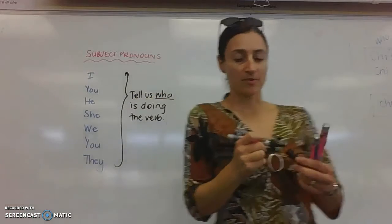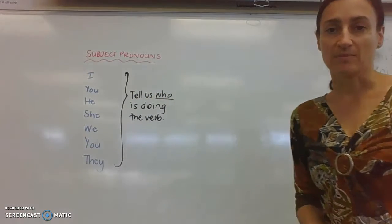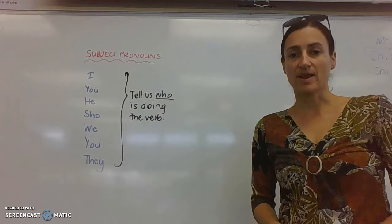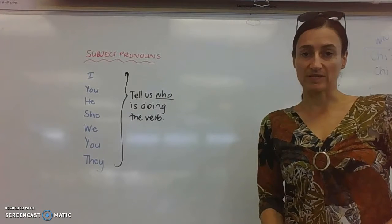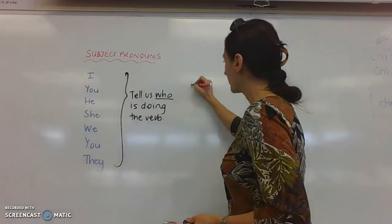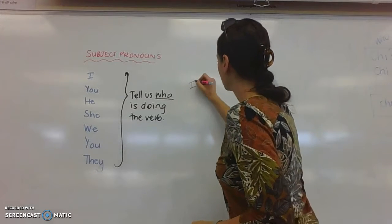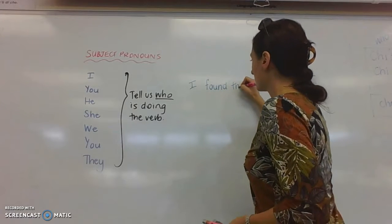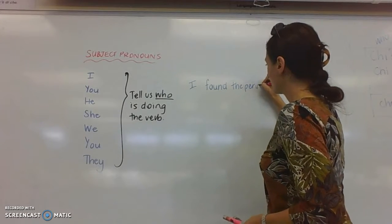Now, from the other lesson that we did on active and passive voice, you remember that we had to flip the sentences around so the object became the new subject. So, for example, I found the perimeter.